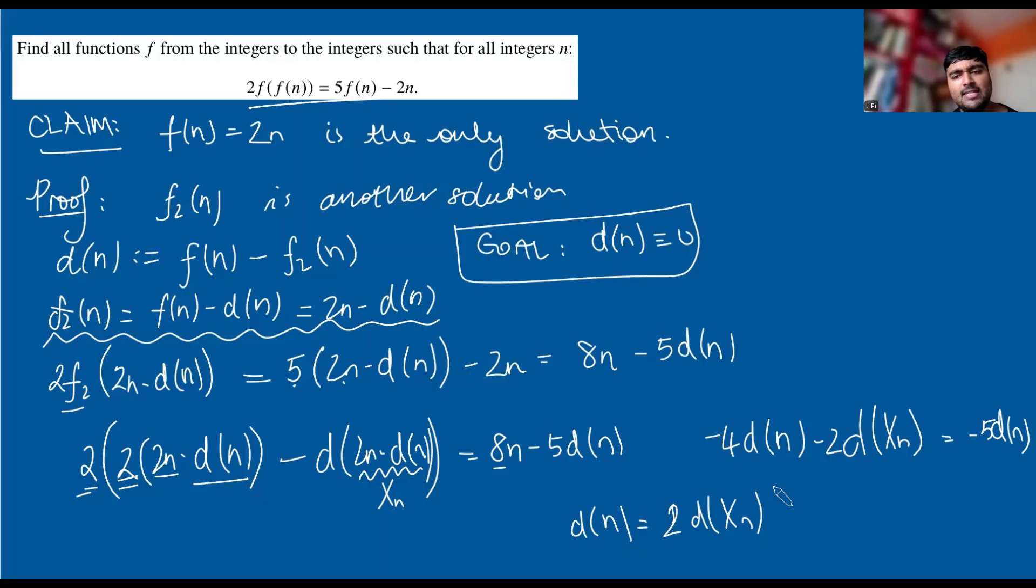So d(n) = 2d(x_n). Why does this mean that d must be the zero function? Remember this equation is true for any integer n. So you can choose your favorite integer n, doesn't matter, this equation will be true. Let's choose 6 for no particular reason. So d(6), according to this equation, will be 2d(x₆). But now I can rinse and repeat this equation, replacing n with x₆. This is going to be 2·2d(x(x₆)), and 2·2 is 4. So this is 4d(x(x₆))).